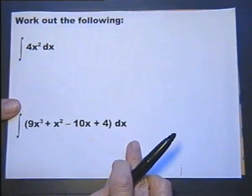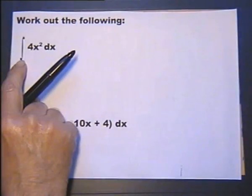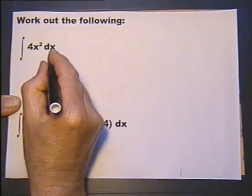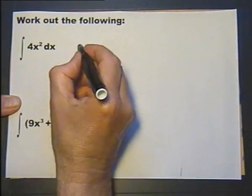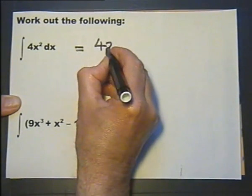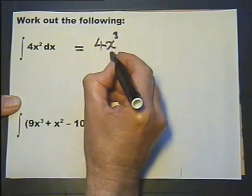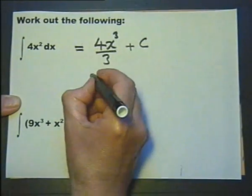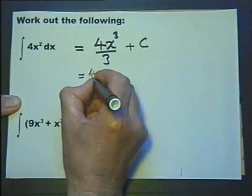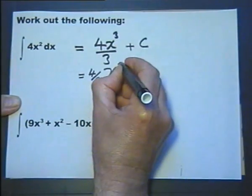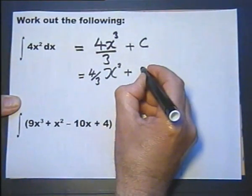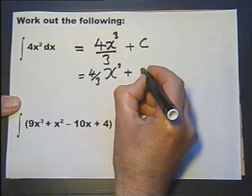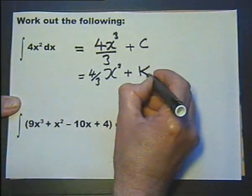This integral sign tells us to integrate. So these are integration questions — I'm being told to integrate 4x squared with respect to x. I raise that by one power and divide by that power, then add a constant of integration. You can write the answer in other ways. You don't have to use the letter C; you could use any letter you like, though we usually use C or sometimes K — it's up to you.